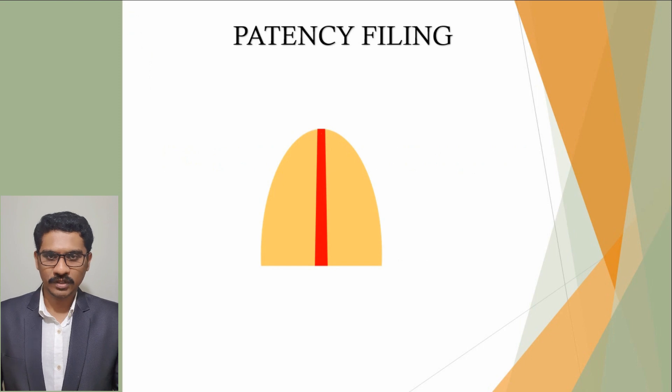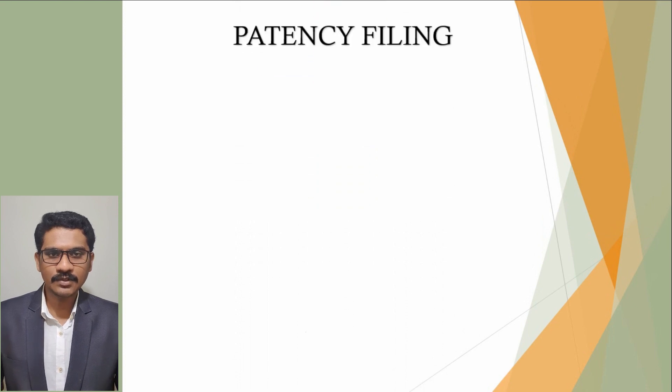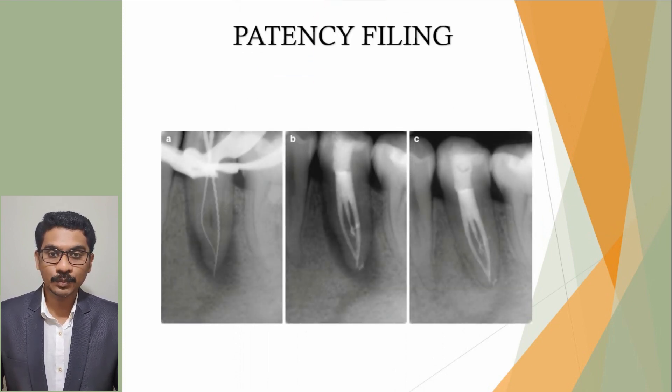Let's start with patency filing. This was first described by Bouchner. It is a purposeful placement of a small sized file, say a number 8 or number 10 K file, beyond the minor diameter at the apex for about 0.2 to 0.5 mm without widening it. It prevents packing of debris in the apical part of the canal and helps to achieve good apical clearance. It also helps to prevent the loss of working length during instrumentation.